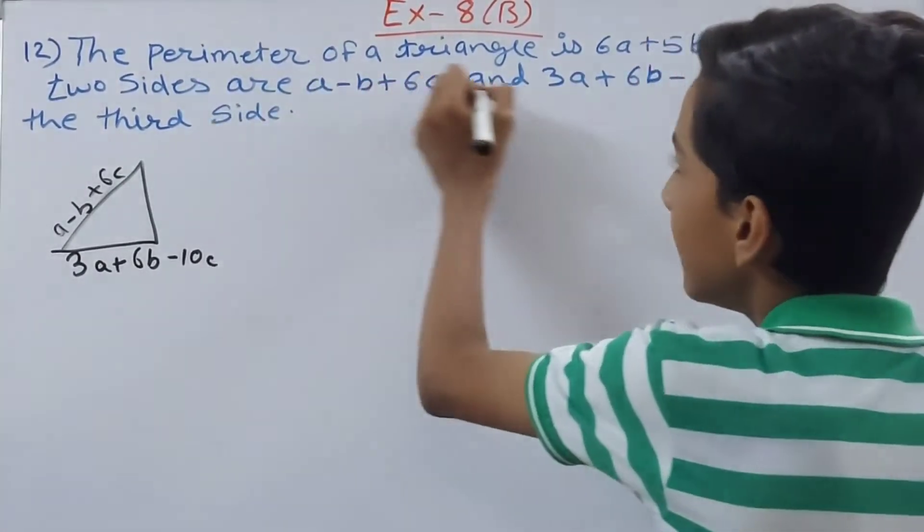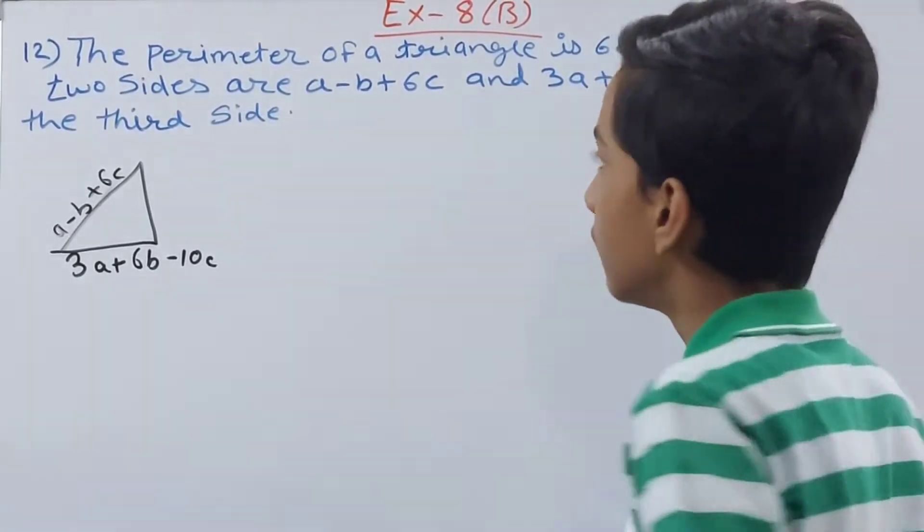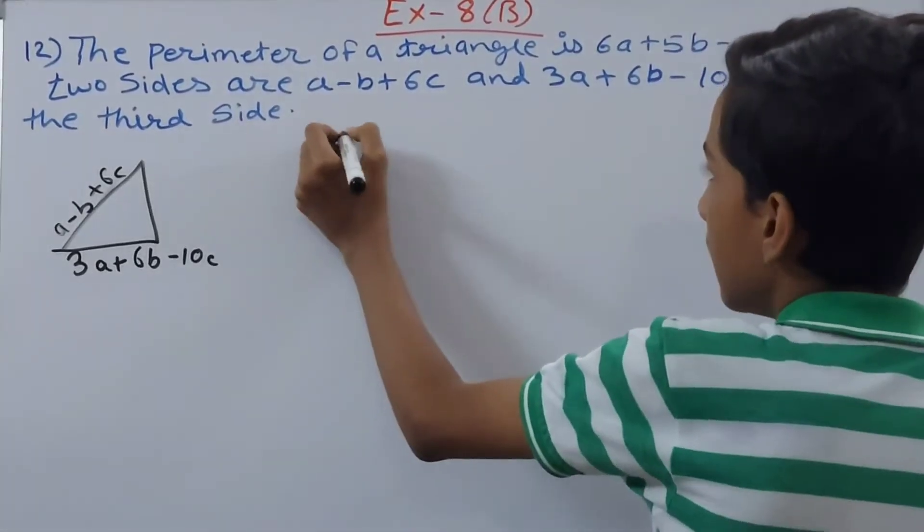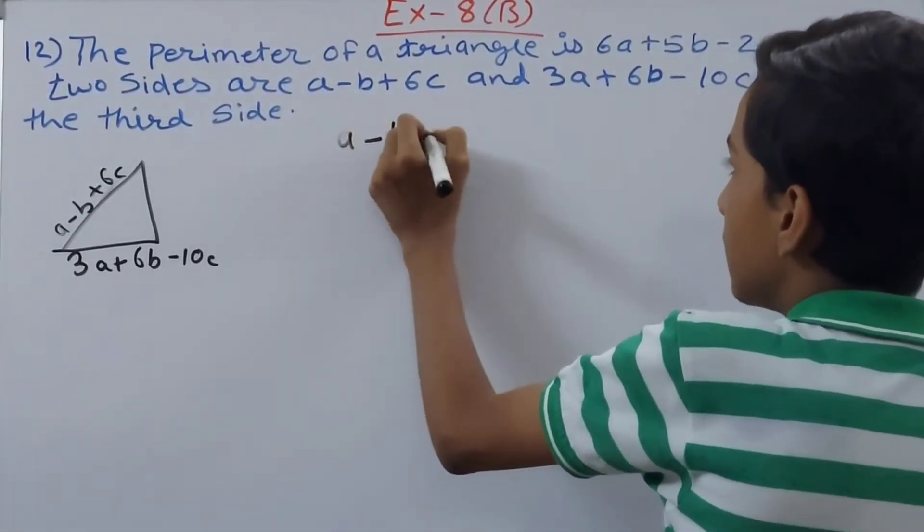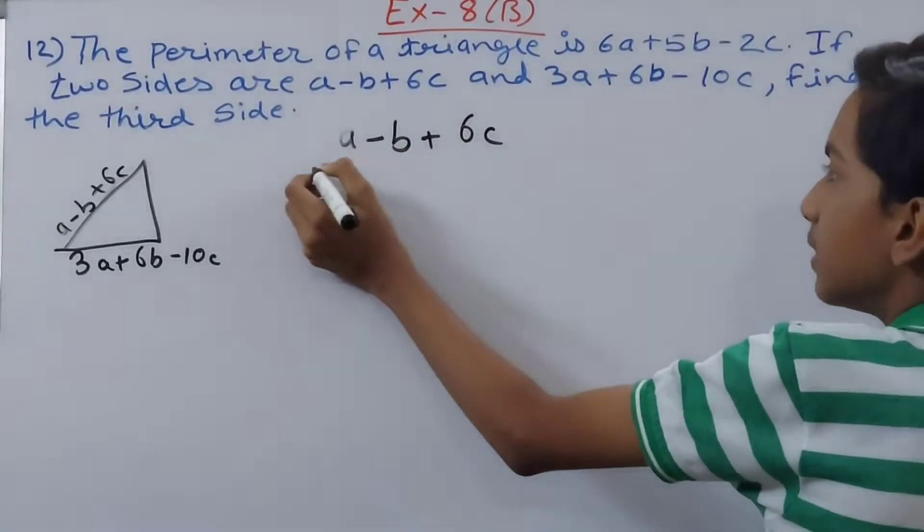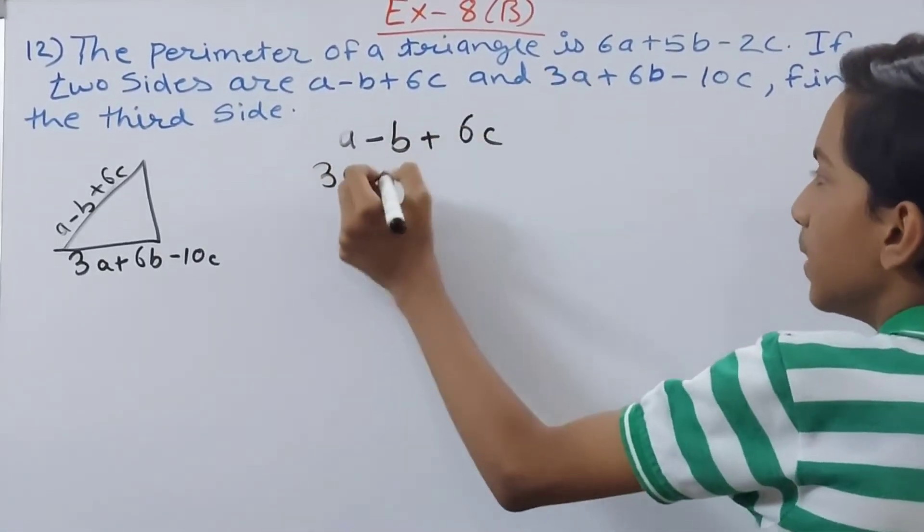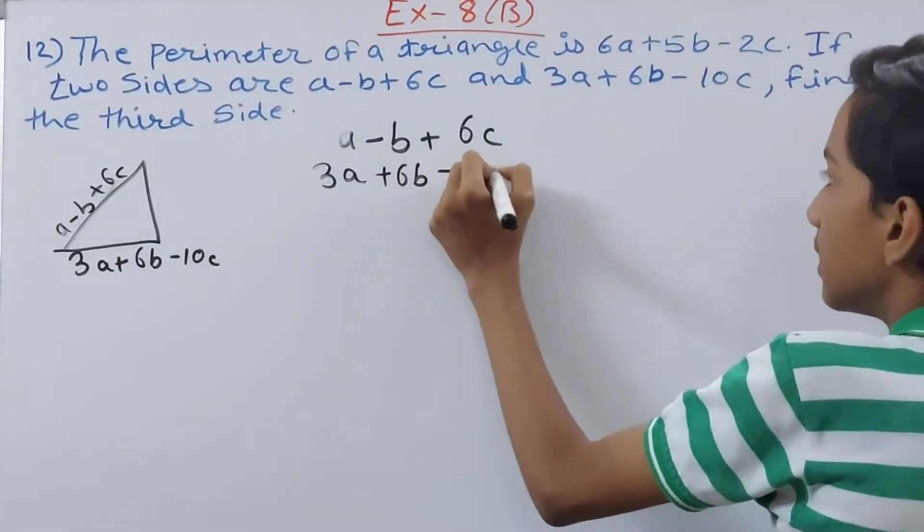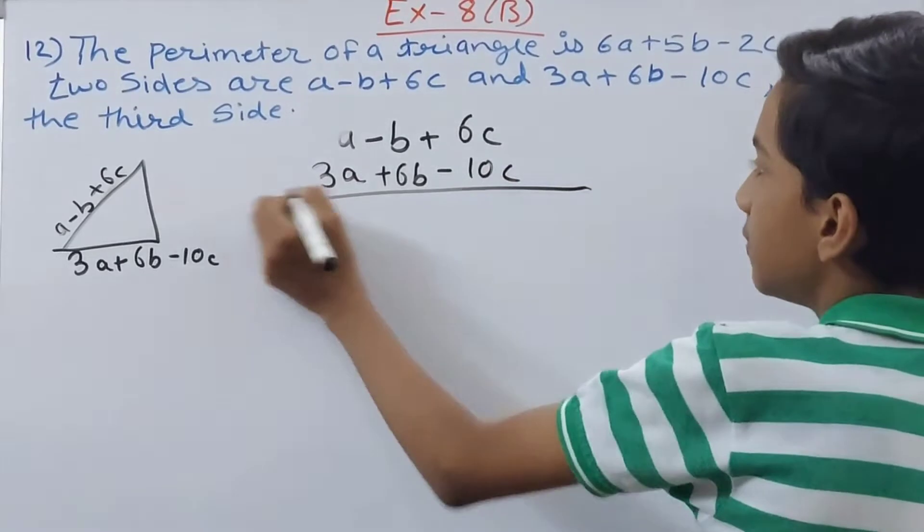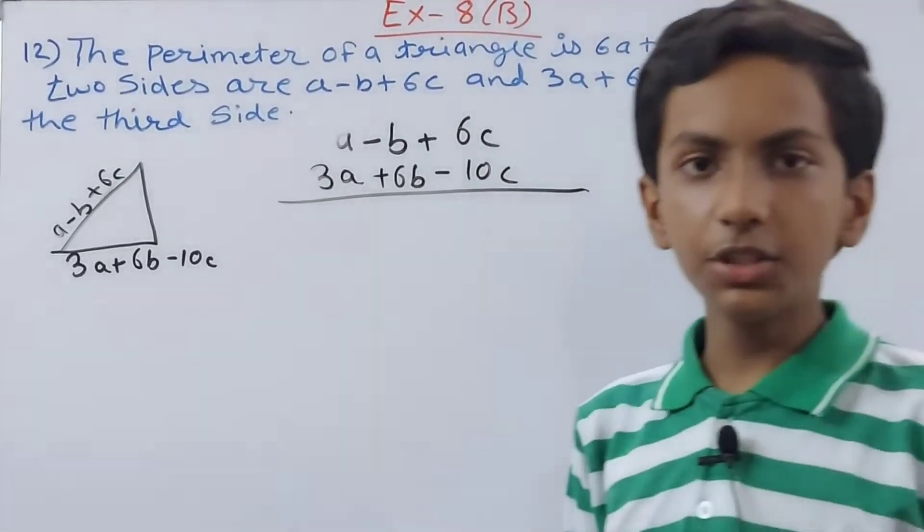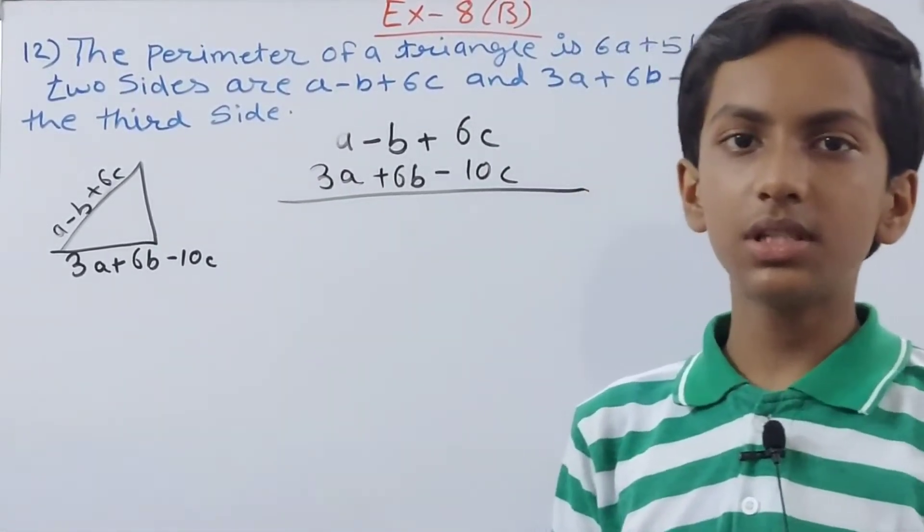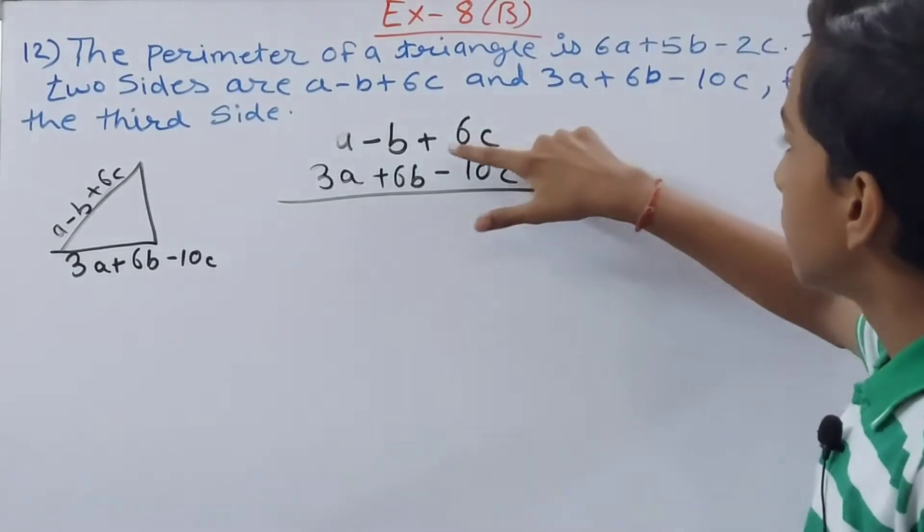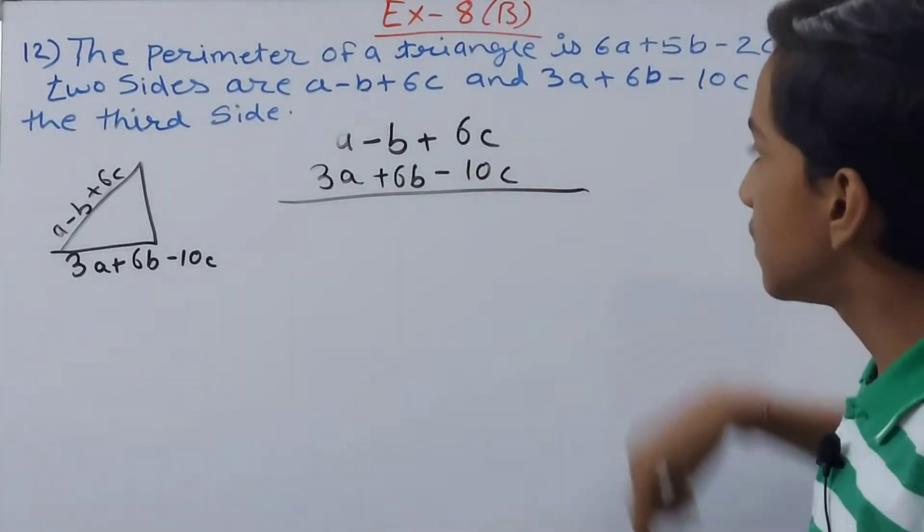So first of all we will add the two sides. The first side is a - b + 6c and the second one is 3a + 6b - 10c. Now we'll add. For addition we don't change the signs, just simply start to solve them.